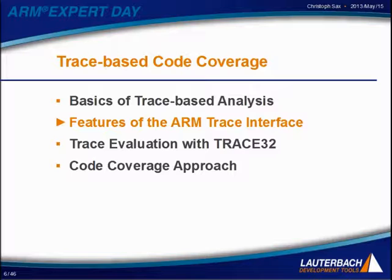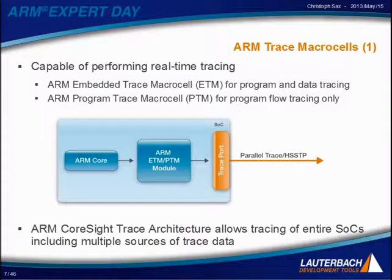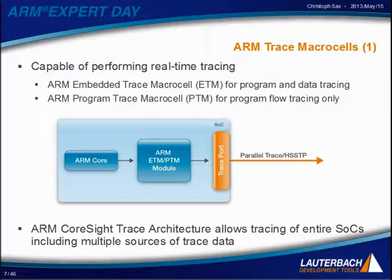Let's start with the features of the ARM trace interface. The central unit of the ARM trace interface are the so-called ARM trace macro cells. The ARM trace macro cell receives its information directly from the ARM core and uses this information to generate trace data and to transmit this data to the trace port. The ARM trace macro cells are capable of performing real-time tracing. We have two versions: the Embedded Trace Macro Cells, or ETM, which are capable of performing program and data tracing, and the PTM, which stands for Program Trace Macro Cell, which is only capable of program flow tracing.